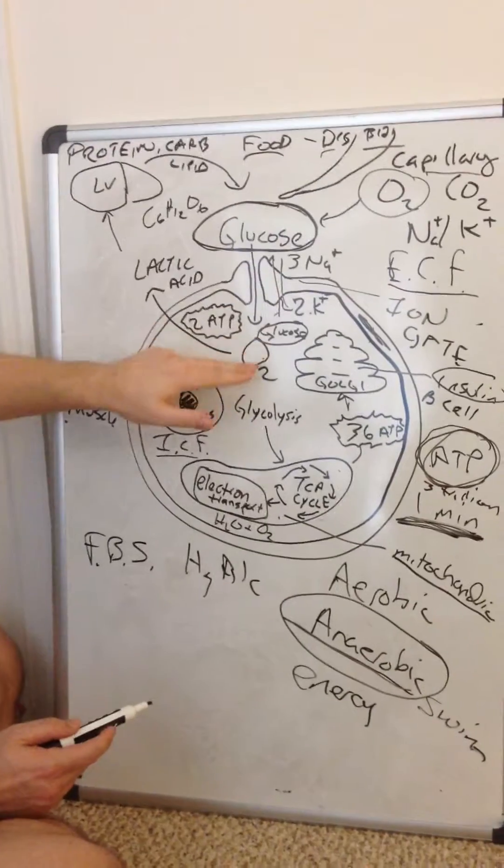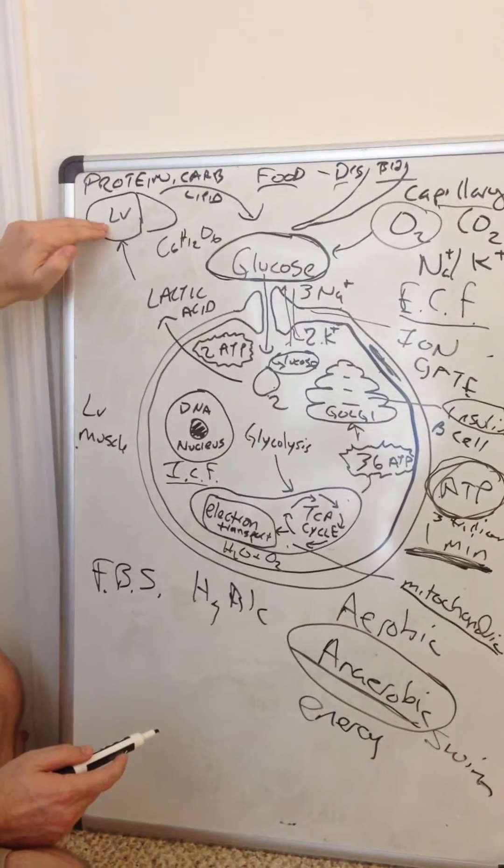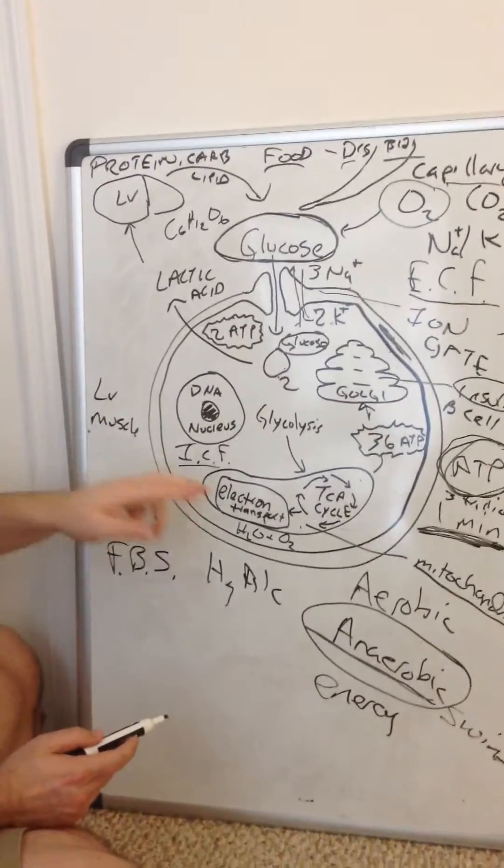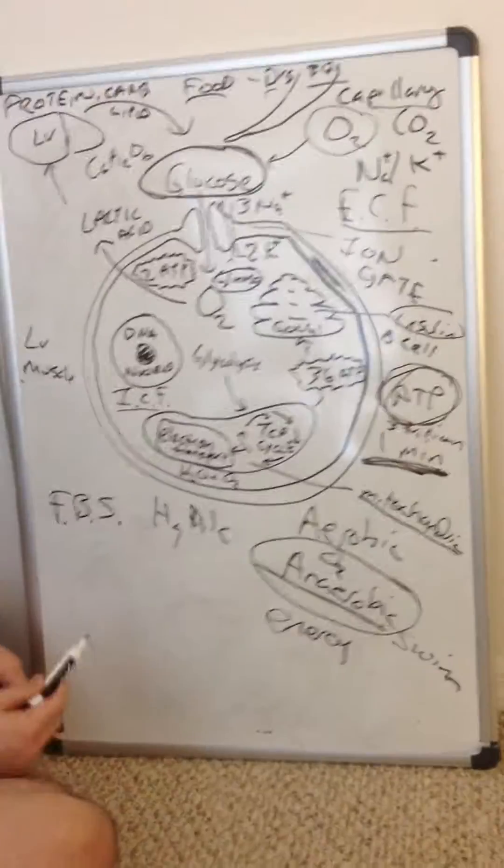So it metabolizes very quickly. Glucose to lactic acid, glucose to lactic acid, glucose to lactic acid, to the liver, back to glucose. To the liver, back to glucose. On and on again, because I'm not providing very much O2, because I'm not breathing.